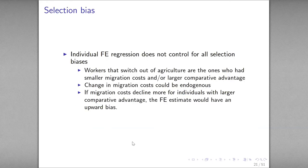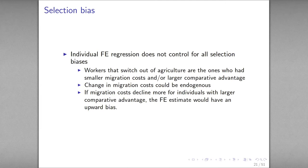The individual fixed effect regression does not control for all selection biases, because it captures the income gain for switchers, and workers who switch out of agriculture are the ones who had smaller migration costs or a larger comparative advantage. The change in migration costs could be endogenous — for example, if migration costs decline more for individuals with larger comparative advantage, the fixed effect estimate could have an upward bias.